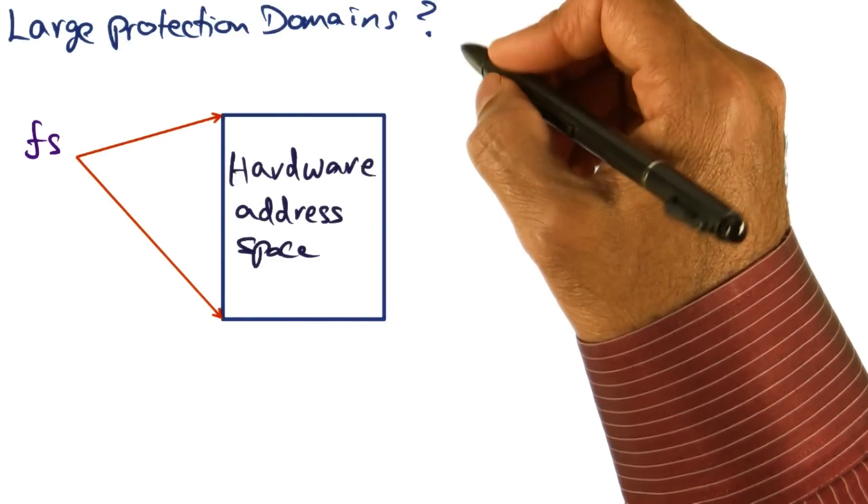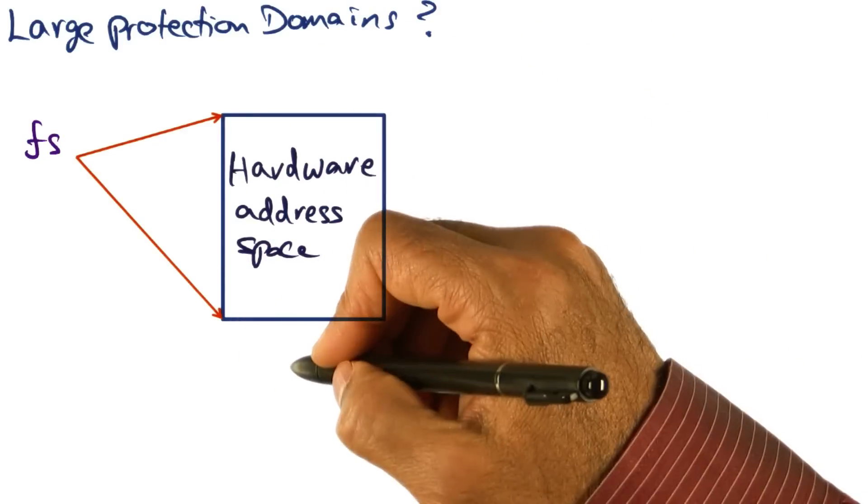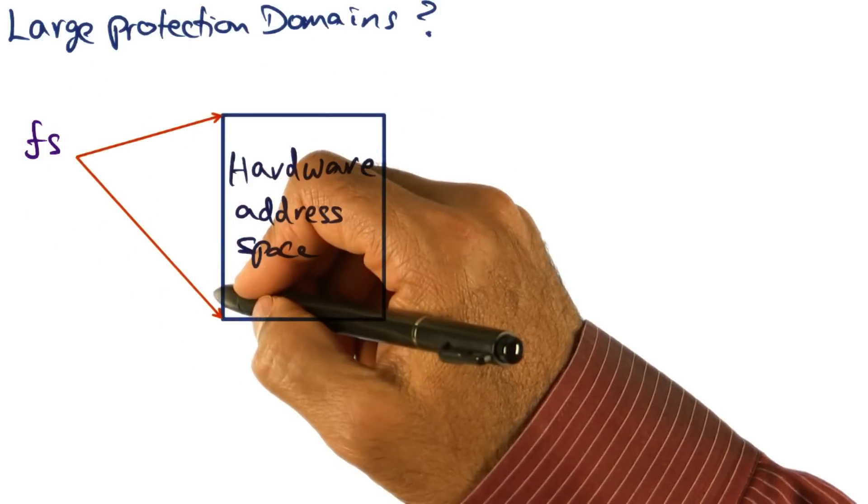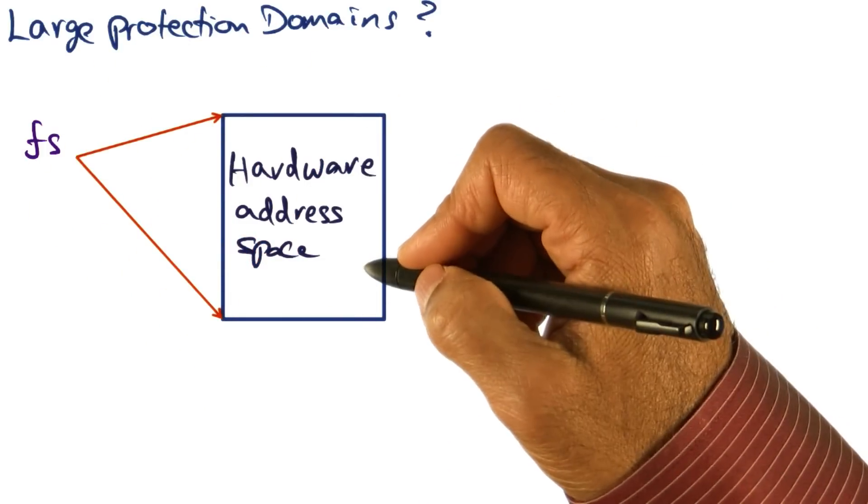You may ask, what if the protection domain is so large that it needs all of the hardware address space? Maybe the file system code base is so big that it needs the entire hardware address space and cannot share it with anybody else.